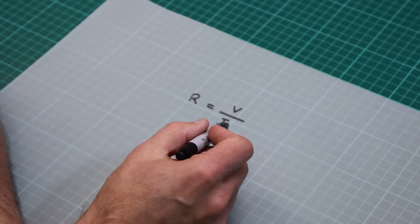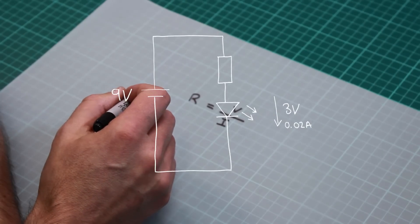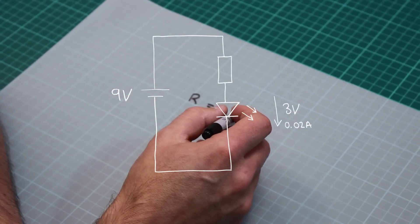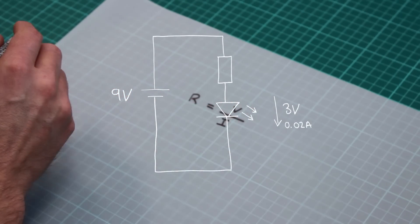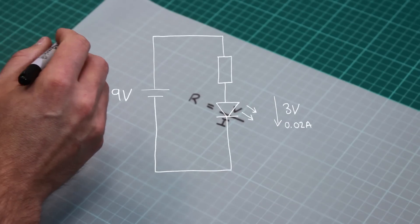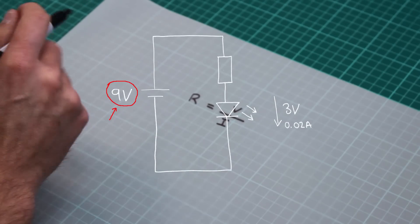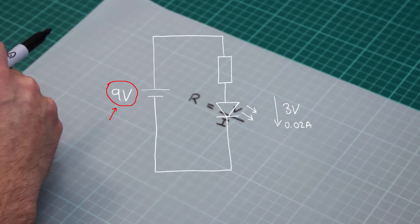Now we know the current is 20 milliamps from the data sheet for the LED and we know that the voltage across the resistor is six volts. This is because it is the nine volts from the battery less the three volts that is dropped across the LED.